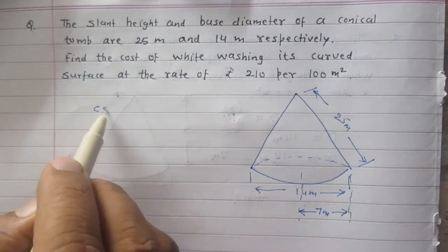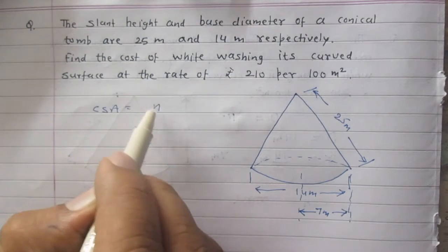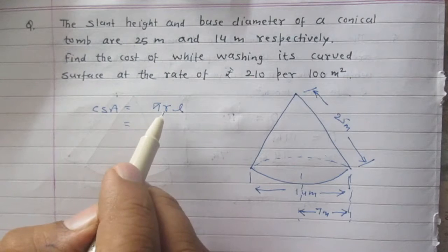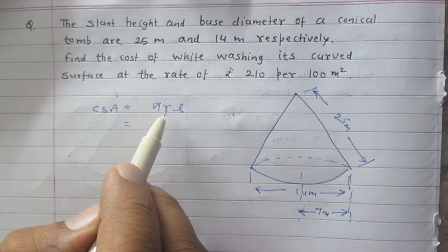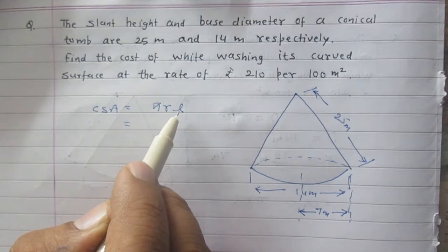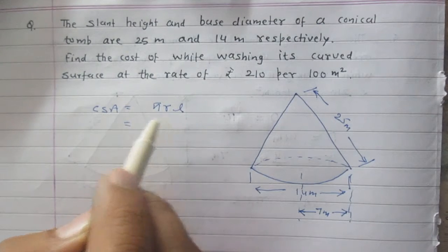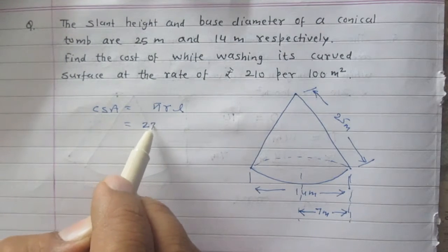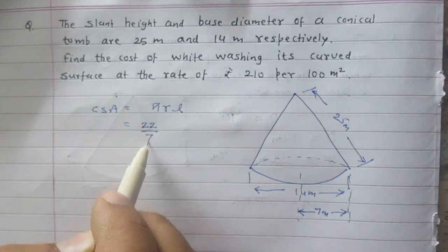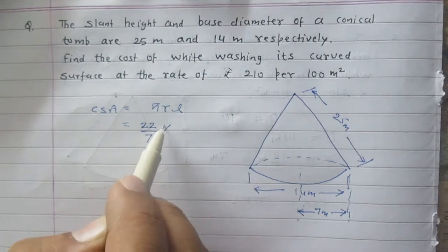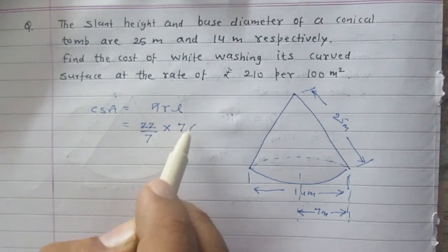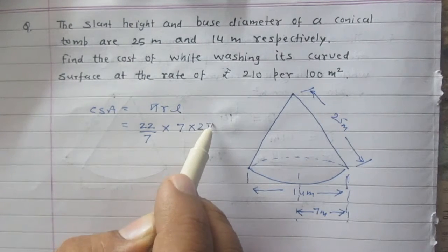Curved surface area of the cone is πRL where R stands for the radius of the base of the cone and L stands for slant height of the cone. According to the dimensions we are given, π is 22/7, radius is 7m and slant height is 25m.